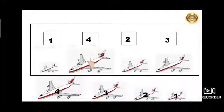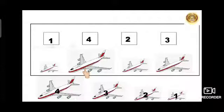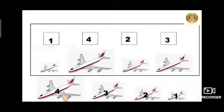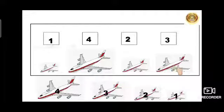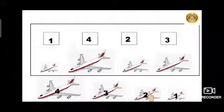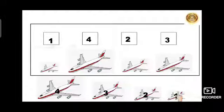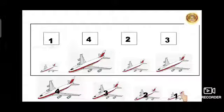Descending means biggest to smallest. So what we have to do — first we have to take the biggest aeroplane, which is the 4th number aeroplane, and put this here first. The next one is the 3rd number aeroplane — we put it after the 4th. Then lesser than that is the 2nd number aeroplane. And the smallest one is the 1st number aeroplane. Like that, you have to put the numbers also from biggest to smallest. This is called descending order.